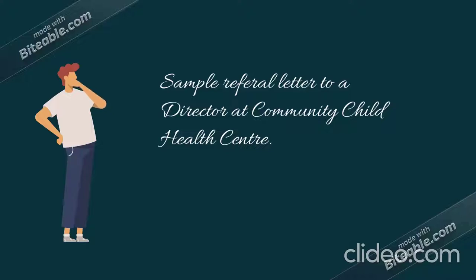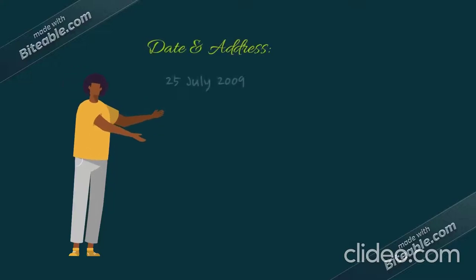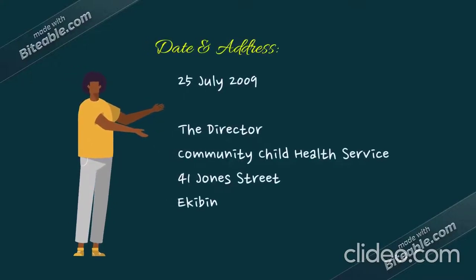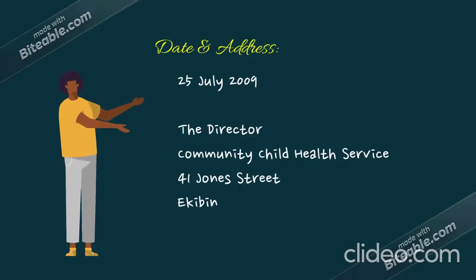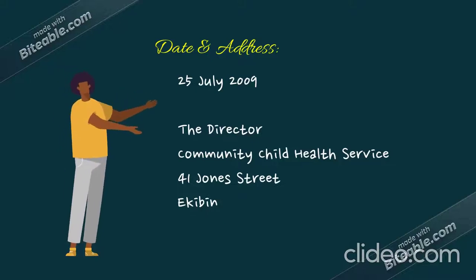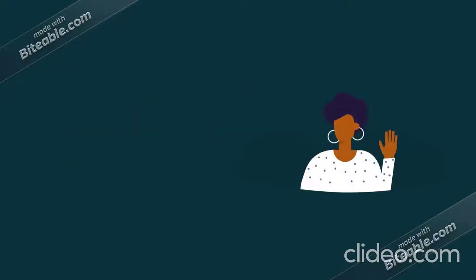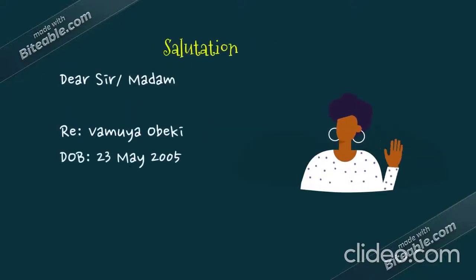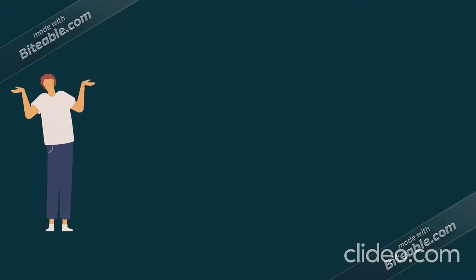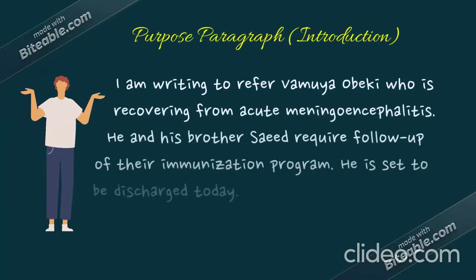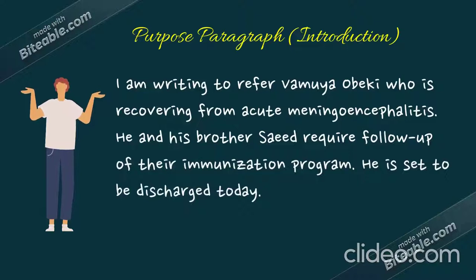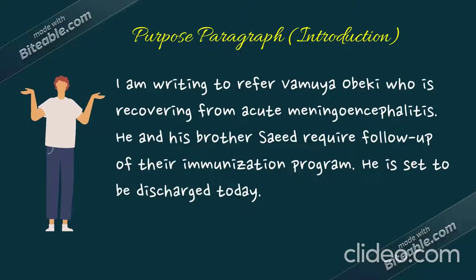Now let us see the letter. Date and address: 25 July 2012. Address to: The Director, Community Childhood Health Service, 41 John Street, Epping. For the introduction paragraph, since this is a referral letter, we write: 'I am writing to refer Wamiya Obiki' — then state the reason and present medical condition.